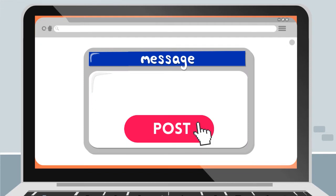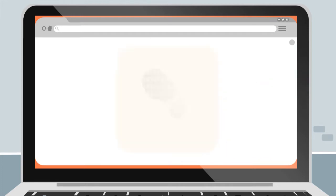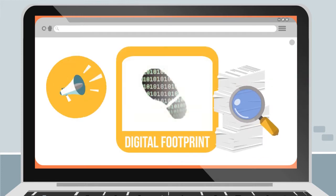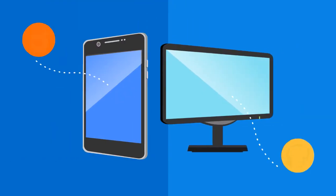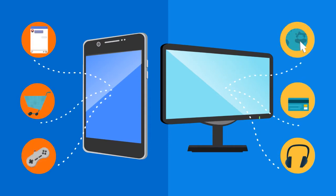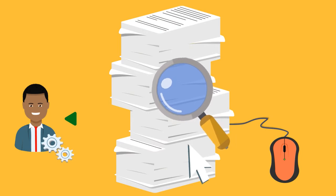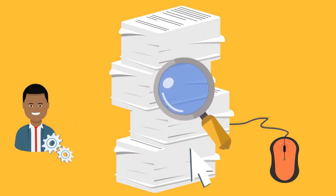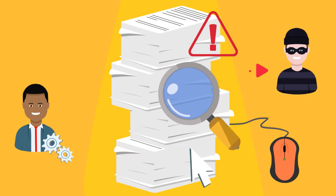Once you post something online, it can't be erased, so your digital footprint can last forever. This can be a good thing if your digital footprint includes things that give you a positive reputation online — this can help you build your personal brand. Your online history can also help the apps you use know more about you. They can use this information to serve you better by adjusting to the things you like and your daily habits, but they can also use this information in the wrong way and share it with others.